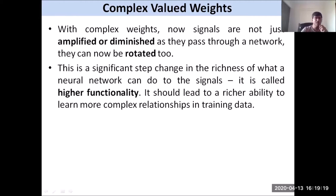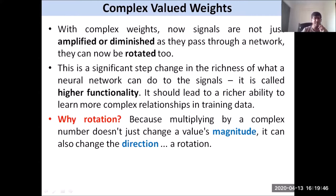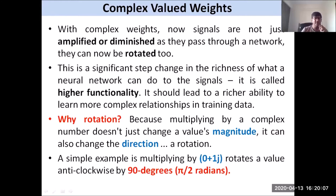This should lead to a richer ability to learn more complex relations. With the introduction of higher functionality into the data, it is definitely going to help in terms of better learning or learning complex relationships in the training data. We are also talking about rotation because when you multiply by a complex number it doesn't only change the magnitude — it can also change the direction. Multiplying by the complex number 0 + 1j, for example, implies a rotation of 90 degrees anti-clockwise, or pi over two radians.